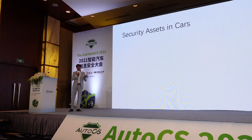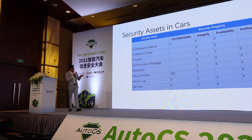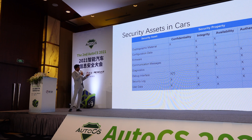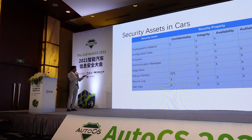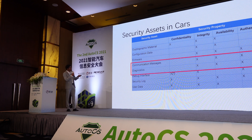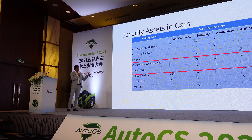What are the security assets available in a car? The table shows the security assets: cryptographic materials, configuration data, firmware, communication messages, diagnostics, debuggers, security logs, and user data. With Ethernet, we will focus only on the communication messages and diagnostics.